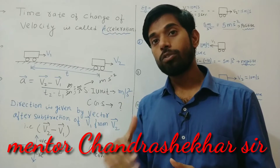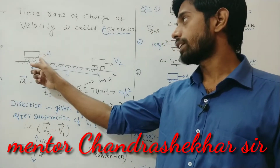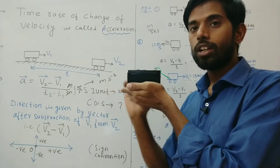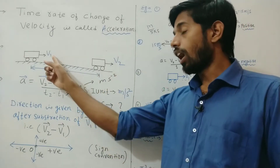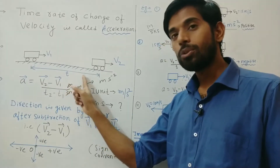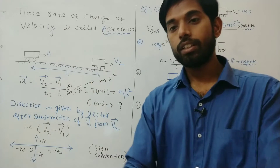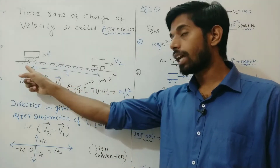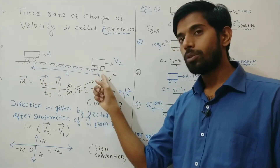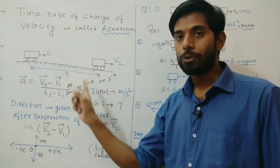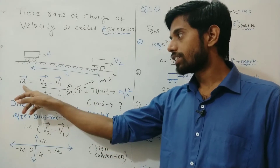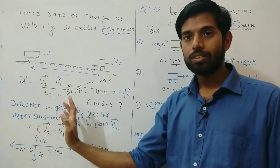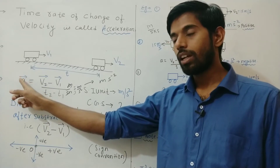You can see here this is an object whose initial velocity is v1. Suppose this object is moving with an initial velocity v1, and after time t its velocity changes to v2. We know that acceleration is the rate of change of velocity. Suppose the initial time is t1 and final time is t2, and t is the time interval between t1 and t2. Therefore, acceleration is equal to v2 minus v1 — that is, final velocity minus initial velocity — divided by t2 minus t1.